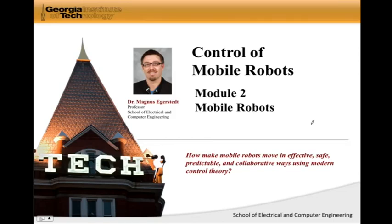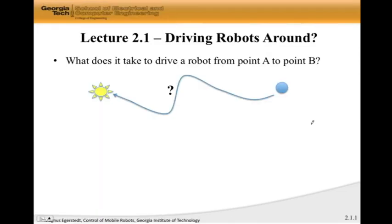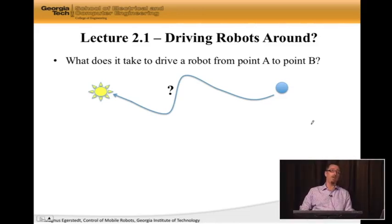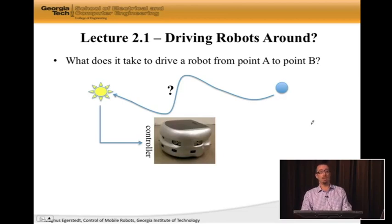We're going to start with a very simple question: How do I drive a robot from point A to point B, or in this case from a blue ball to a yellow sun? The first question we need to understand before we can even answer how to drive it is what do we need? Well, obviously we need to measure where the sun or goal point is and somehow turn this into a control action, taking information from the sun and feeding it into the controller.